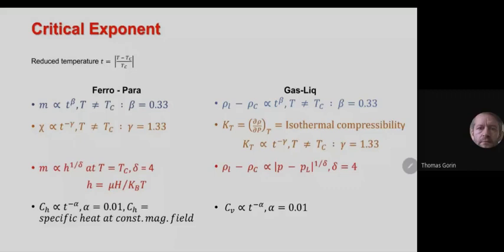The interesting thing is that for all these quantities — susceptibility, specific heat, magnetization — the critical exponents are universal. For any magnetic system you take, the values of these critical exponents do not change. For example, whether you take a nearest-neighbor Ising model or a next-nearest-neighbor Ising model, as long as you don't change the symmetry with very long-range interactions, these exponents remain the same.